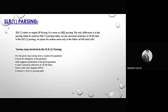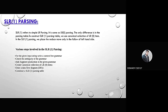SLR(1) refers to simple LR parsing. It is similar to LR(0) parsing — the only difference is in the parsing table. To construct the SLR(1) parsing table, we use the canonical collection of LR(0) items, and we place the reduce move only in the follow set of the left-hand side. Steps include: write a context-free grammar, check for ambiguity, add augmented production, create canonical collection of LR(0) items, draw a DFA, and construct the SLR parsing table.